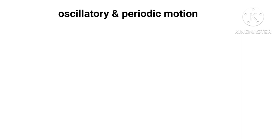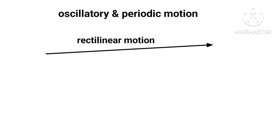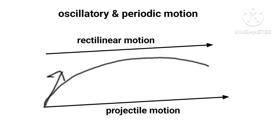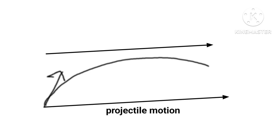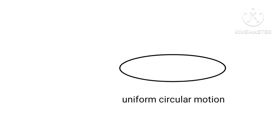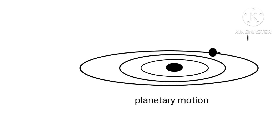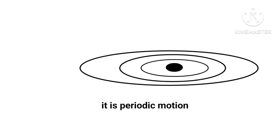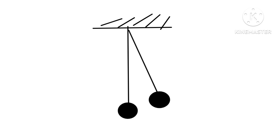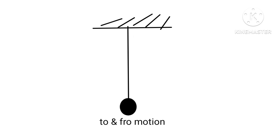In our daily life we come across various kinds of motions, for example rectilinear motion and projectile motion, but both of these are non-repetitive. We are also familiar with uniform circular motion and planetary motion in the solar system, where the motion is repeated after a certain interval of time — that is, it is periodic. The pendulum of a wall clock executes to-and-fro motion about its mean position, which is both periodic and oscillatory motion.